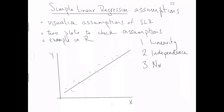The third assumption is normality. What we're essentially saying is that at all values along the x-axis, whatever we might predict on the y-axis at that particular value of x defines a normal distribution. At all places along the x-axis, we define a normal distribution centered at that particular value on the y-axis. So it's like a line of ever-increasing normal distributions along the x-axis.